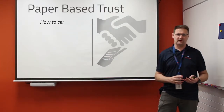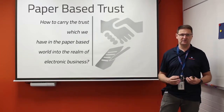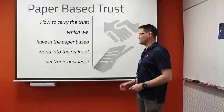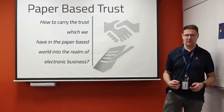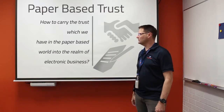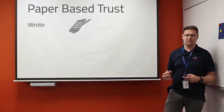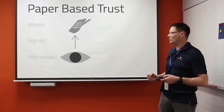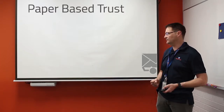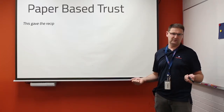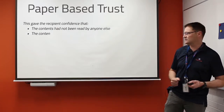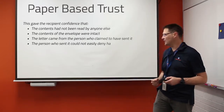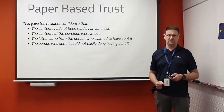In the past we've had the idea of a paper-based trust — people used a piece of paper to sign a document, create a legally binding contract, and that worked pretty well except it doesn't translate into the electronic world. In a paper-based society we wrote and signed a letter, perhaps had a witness verify its authenticity, put it in an envelope and sent it by certified mail. This gave the recipient confidence that the contents hadn't been read by anyone else, hadn't changed in any way, and that the person who sent it was who they thought sent it.